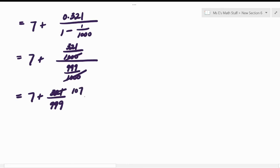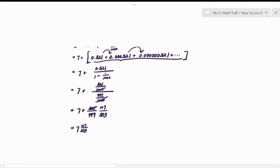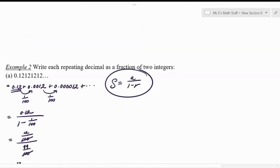And then 999 would be 333. Okay, I think your final answer would be 7 and 107 over 333. There we go. What were the directions though? Oh, a fraction of two integers.